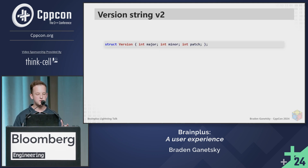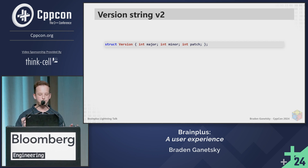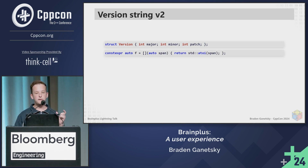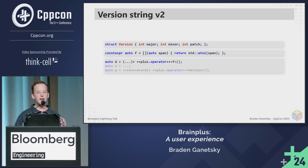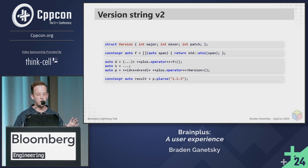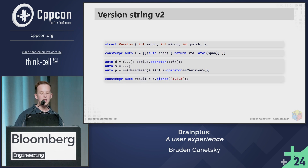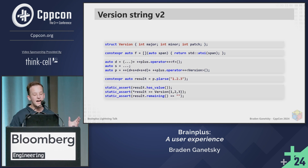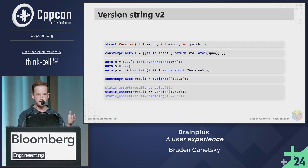For version string v2, I create a struct, a function that takes the span and turns it into an int, and then do exactly the same thing as before. I call p.plus of one, two, three, and you end up actually getting the struct version. This truly does work.